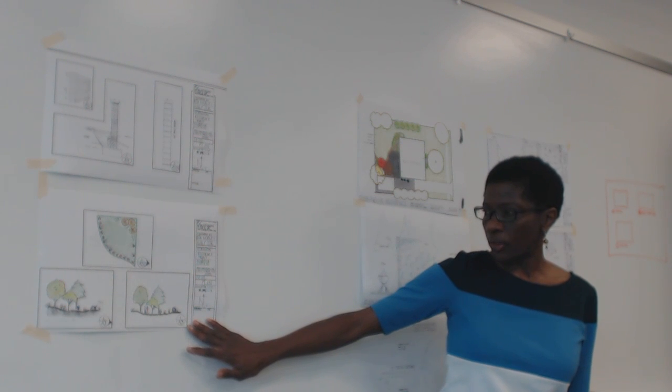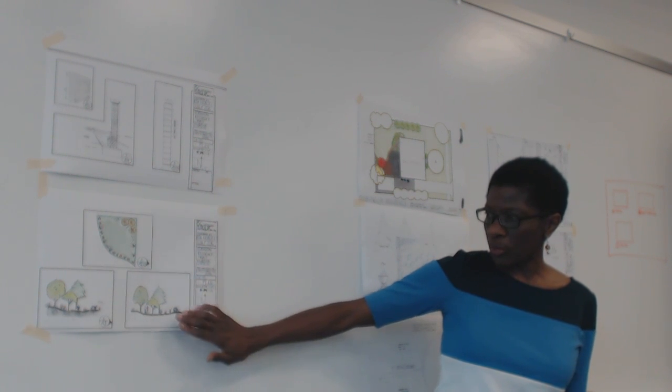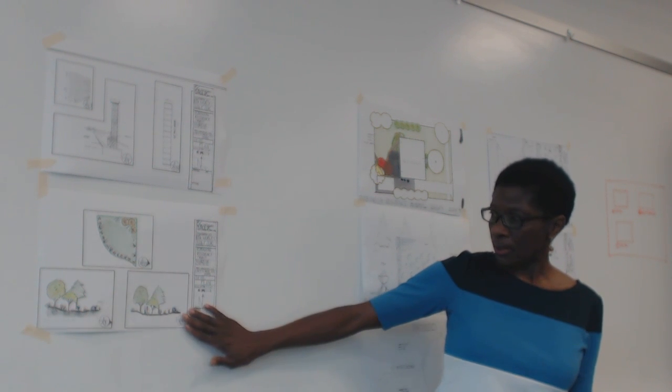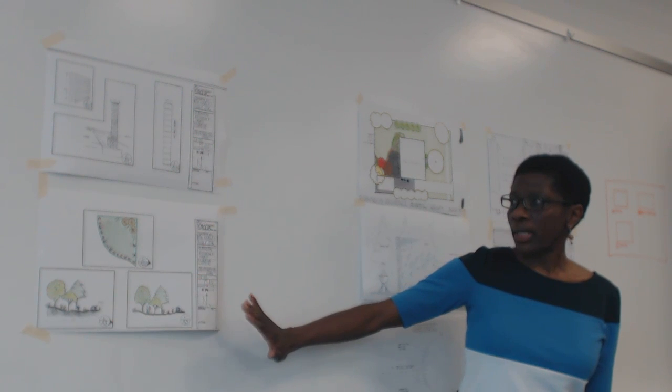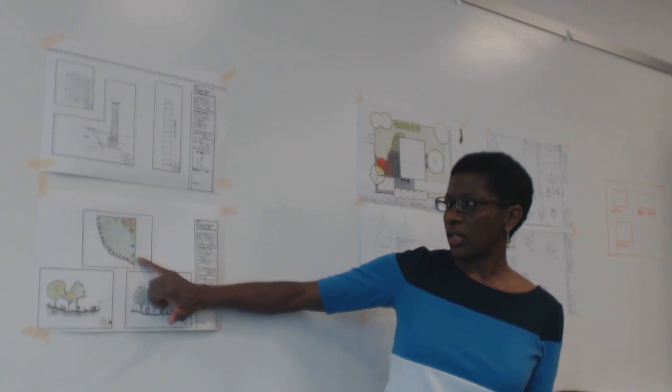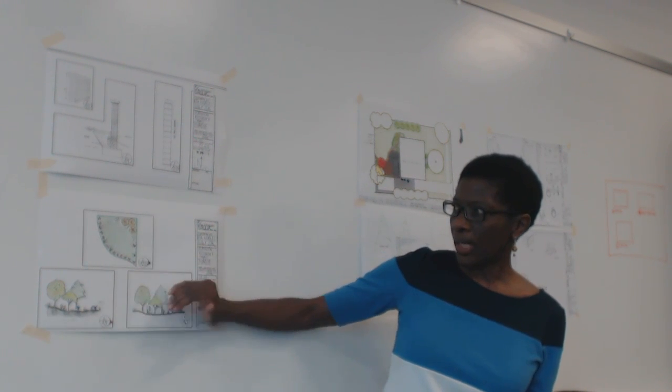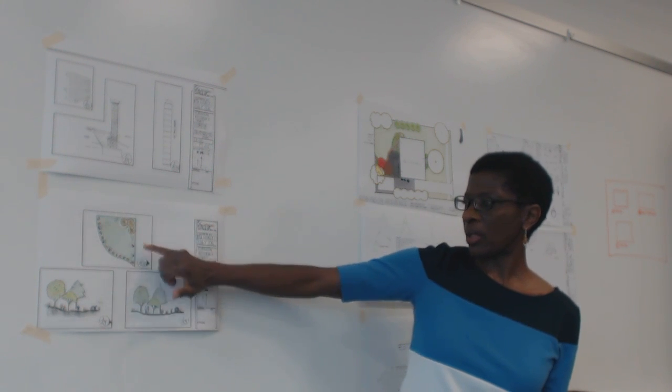And looking at the section view, this one I actually drew a bit larger because I wanted to play around with some plants. So I actually identified the area which is at 16 feet. So I do that 16 feet based on the length here, but the actual cut actually comes across here, but I wanted to be able to show more in that view.